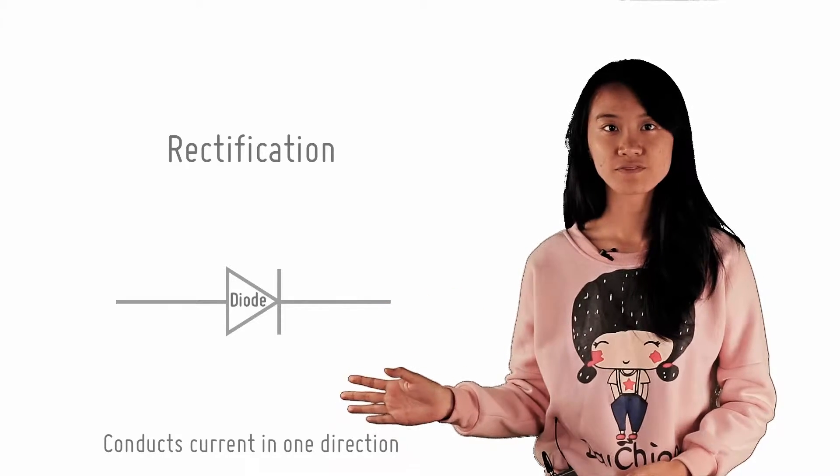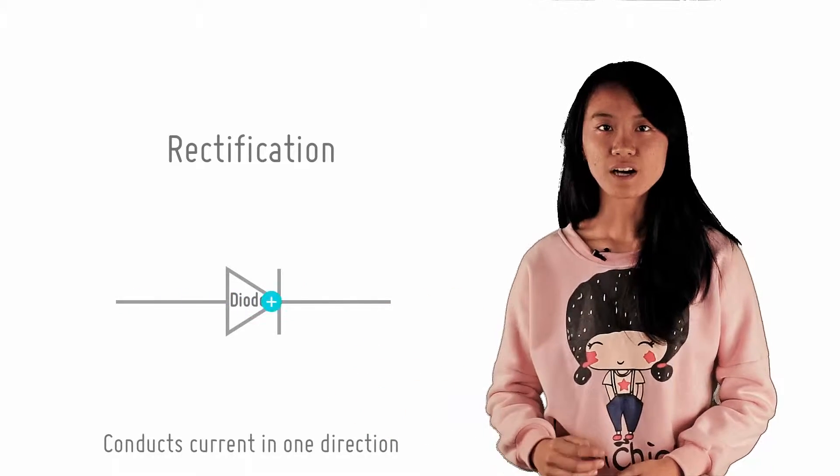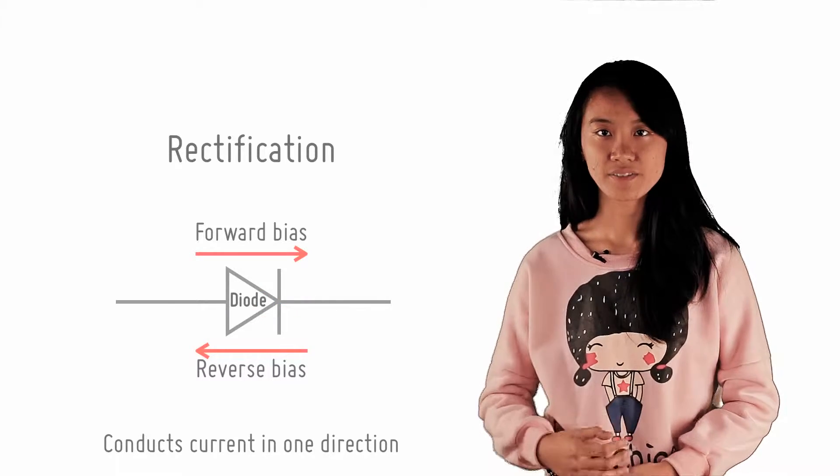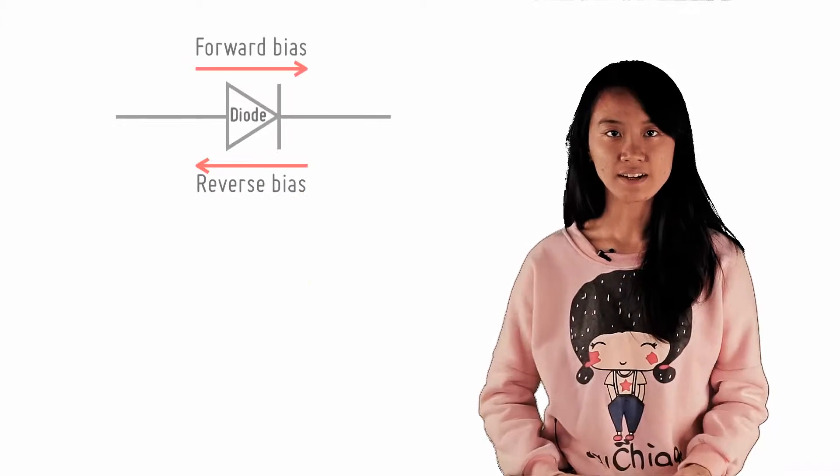This direction is called a forward bias. In the opposite direction, the reverse bias, the resistance of the diode is very high, and so very little current is conducted.